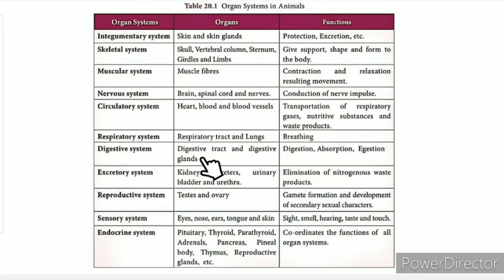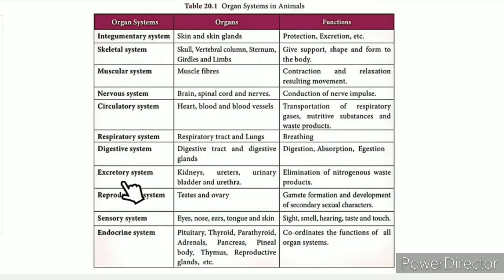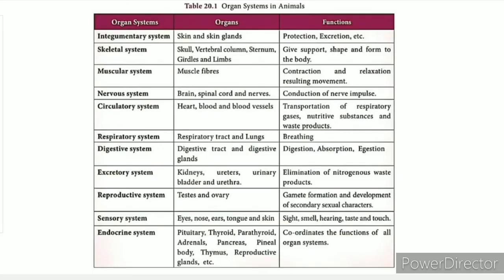The digestive system includes the digestive tract. Starting from the mouth, food passes through to the digestive glands. The process involves digestion and absorption. The excretory system includes the kidneys, urinary bladder, and urethra, responsible for the elimination of nitrogenous waste products. Nitrogen is found in proteins, and waste is eliminated as urine.